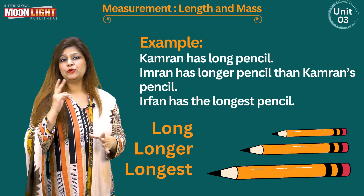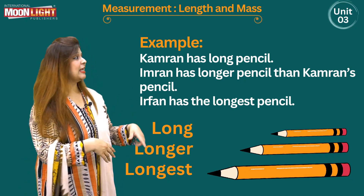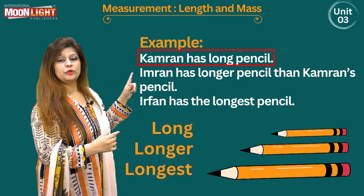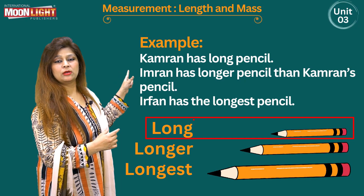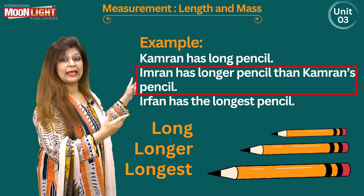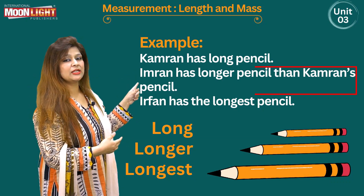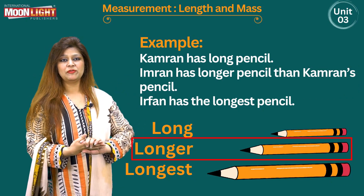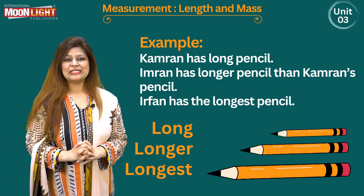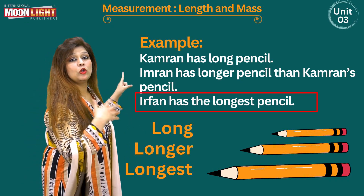So instead of two objects, we are going to take three objects. Kamran has a long pencil — you can see this is a long pencil. Imran has a longer pencil than Kamran's pencil. Now among all the friends, Imran has the longest pencil. You can see from this picture that this pencil is the biggest — the longest.